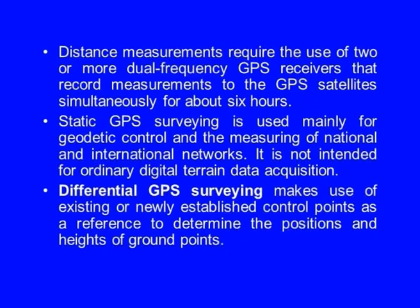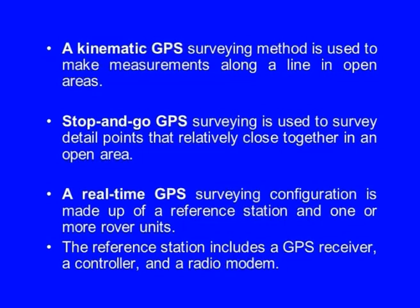Differential GPS surveying makes use of existing or newly established control points as a reference to determine the positions and heights of ground points. A kinematic GPS surveying method is used to make measurements along a line in open areas. Stop-and-go GPS surveying is used to survey detailed points that are relatively close together in an open area. A real-time GPS surveying configuration is made up of a reference station and one or more rovering units. The reference station includes a GPS receiver, a controller, and a radio modem.